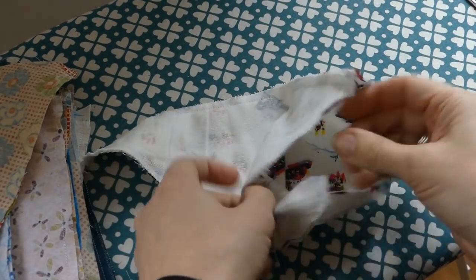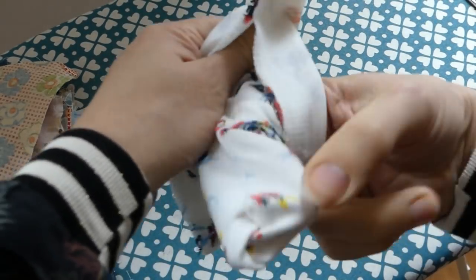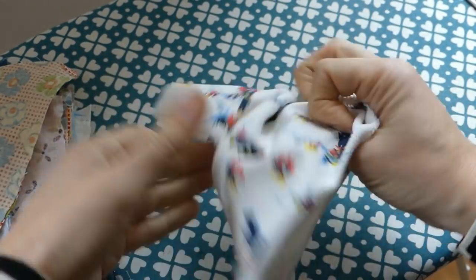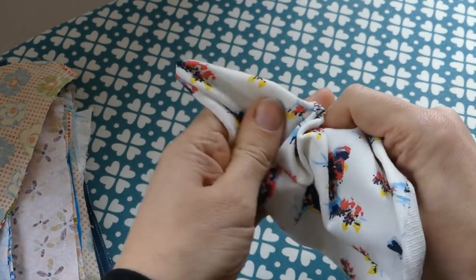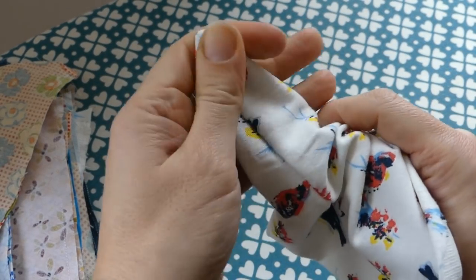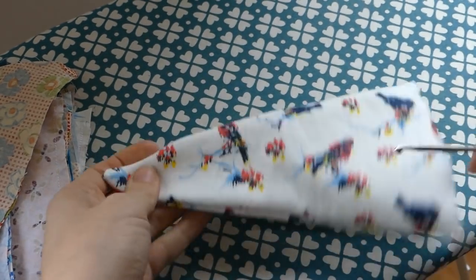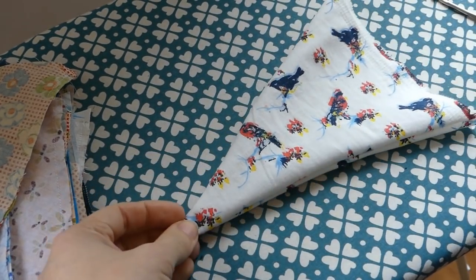Now turn each triangle right side out again. For certain flags I had to use a crochet needle to get the point pushed out. Then take your iron and press.